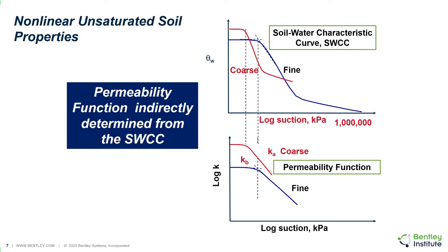Looking at nonlinear soil water characteristic curve and permeability functions for two different soils — coarse and fine — the coarse material desaturates faster at a lower air entry value than the fine material, which has a higher air entry value. The coarse material has an initially higher hydraulic conductivity but may drop at a steeper slope than the fine material permeability function. At any given suction, it is entirely possible that the fines might have a higher conductivity than the coarse, depending on the level of suction present in the soil material.